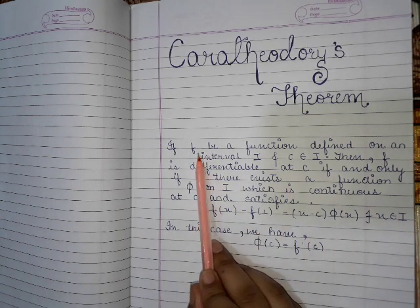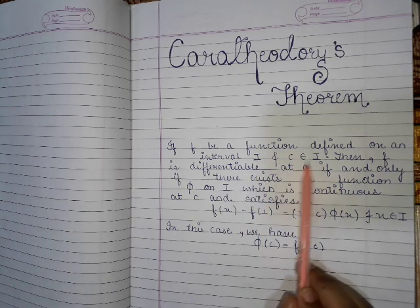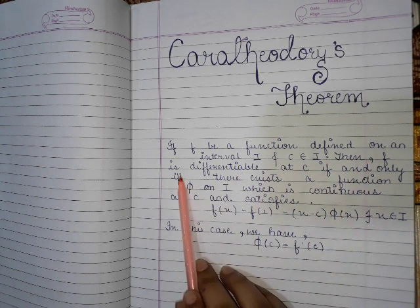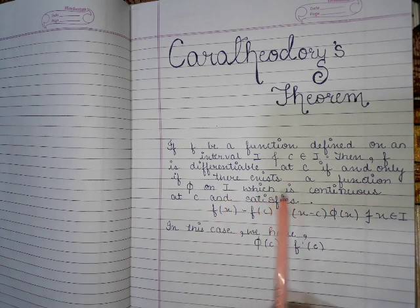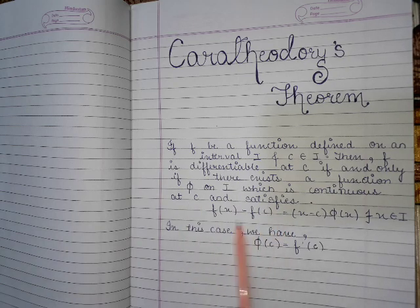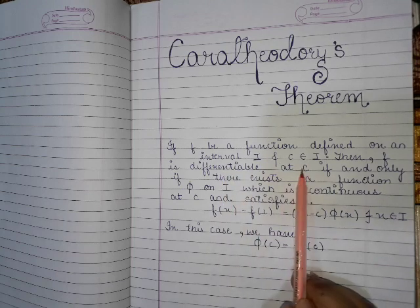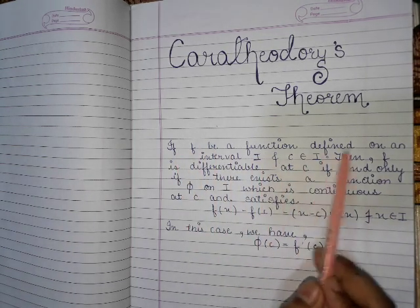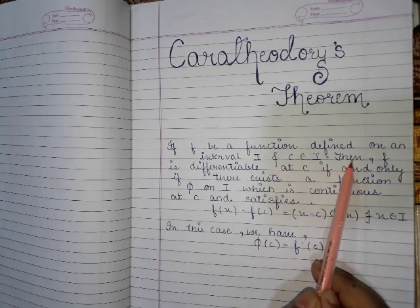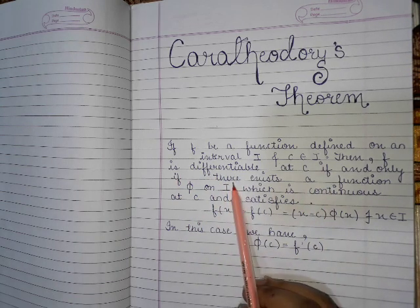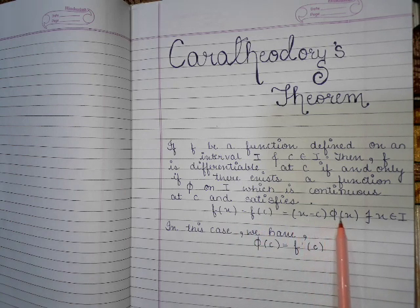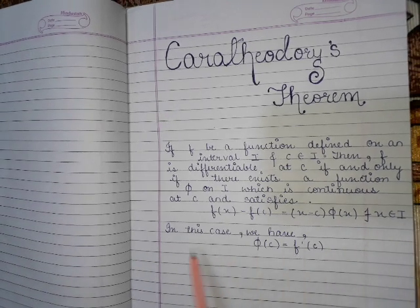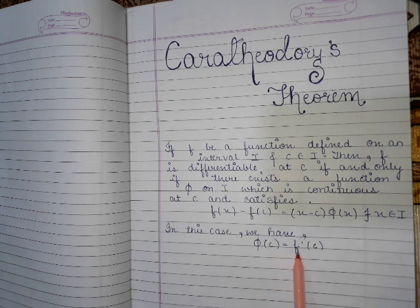So if there is a function f defined on interval I, and c is a point belonging to I, then f is differentiable at c if and only if there exists a function φ on I, which is continuous at c and satisfies f(x) minus f(c) is equal to (x minus c)φ(x) for all x belonging to I. In this case we have φ(c) is equal to f'(c). Take care.